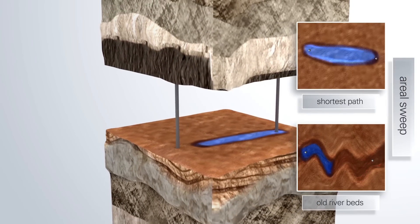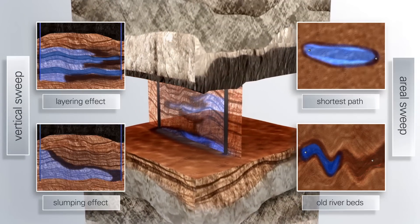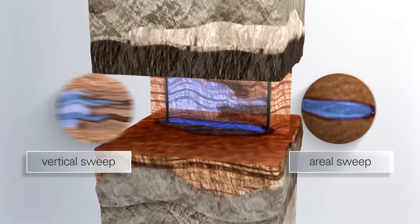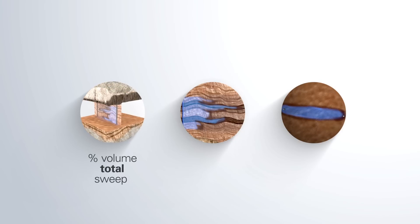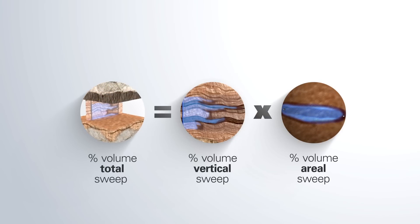The total sweep of a reservoir is the percentage of volume filled with oil which has been contacted by the injected fluid in the connected segments. This is calculated by multiplying the vertical sweep by the aerial sweep.